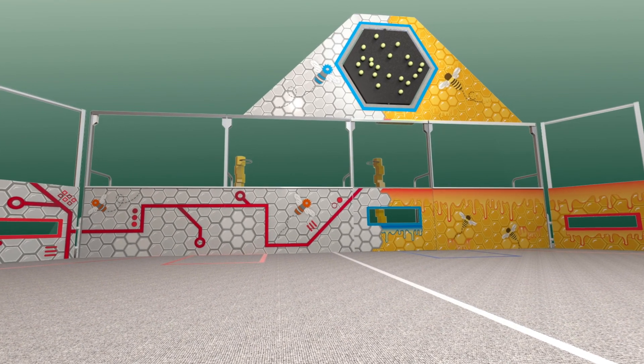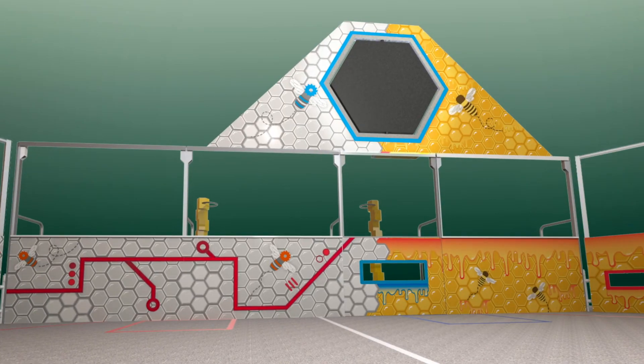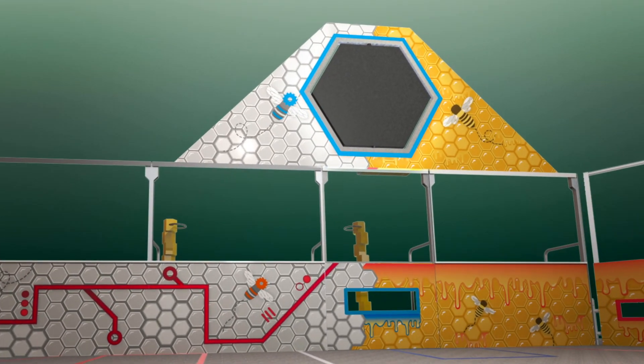When an alliance scores seven rings, the goal flips, allowing the robotic drones more space to collect and score nectar.